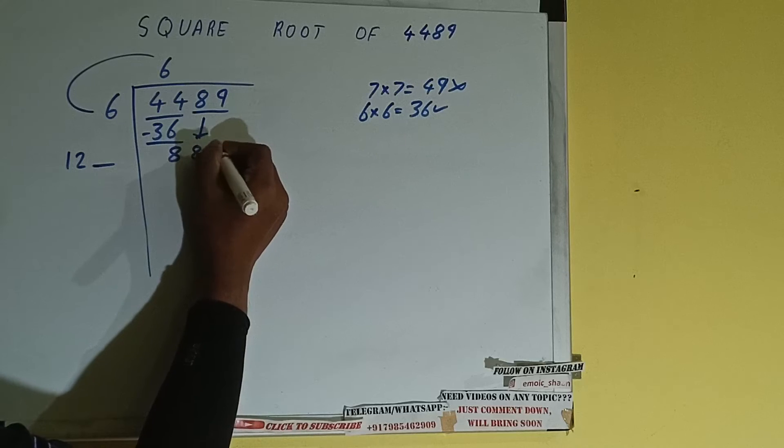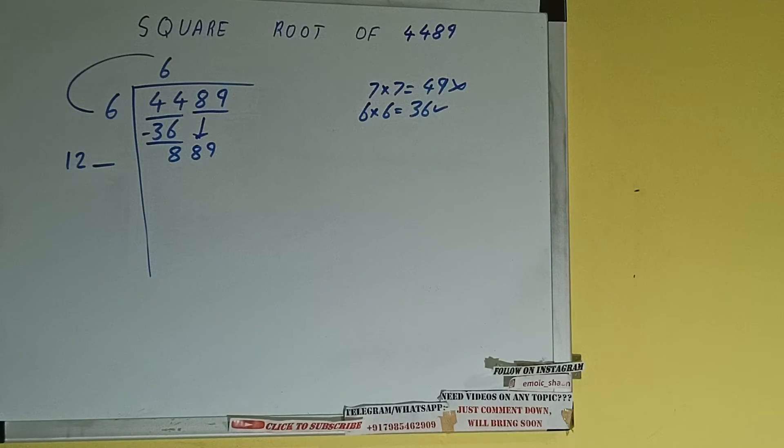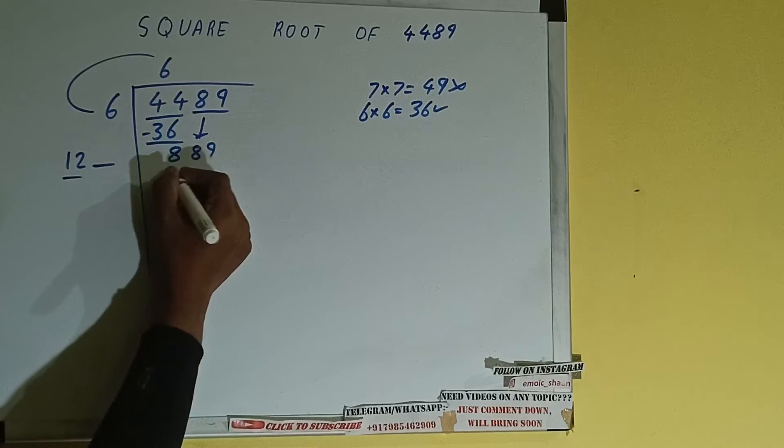So bring the next pair down and it will be 889. Now whatever number we write here we have to write here also.